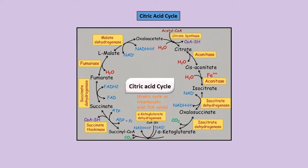The citric acid cycle, also called the Krebs cycle, occurs in the mitochondrial matrix under aerobic conditions. Pyruvate produced by glycolysis is converted to acetyl-CoA by pyruvate dehydrogenase, which initiates the cycle. The products per turn are three NADH, one FADH2, and one GTP — no ATP is directly produced. Both NADH and FADH2 travel to the electron transport chain; each FADH2 generates approximately two ATP.